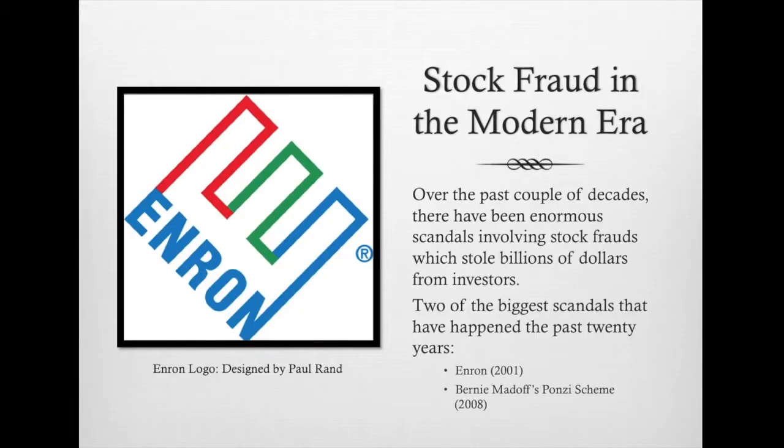Here you can see Jordan Belfort was not completely honest, which is a similar tactic companies use, whether through their accounting documents or with public news. Over the past couple of decades, there have been enormous scandals involving forms of stock fraud which stole billions of dollars from investors. Securities fraud can be a get-rich-quick deal, but it is dangerous and viewed as a serious crime. Two of the biggest security fraud cases in history are the Enron Scandal, which took place in 2001, and Bernie Madoff's notorious Ponzi scheme, which happened in 2008.